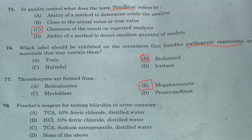Question 78: Fouchet's reagent for testing bilirubin in urine contains — Option A: TCA, 10% ferric chloride, distilled water. Option B: HCl, 10% ferric chloride, distilled water. Option C: TCA, sodium nitroprusside, distilled water. Option D: none of the above. Answer is Option A, TCA, 10% ferric chloride, distilled water.